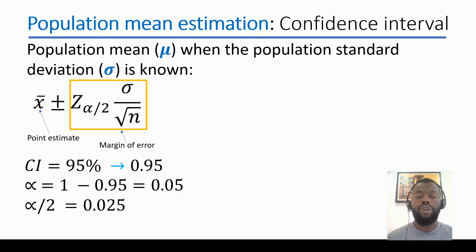As we're estimating the mean, we will have to divide alpha by 2, and we will have 0.025.